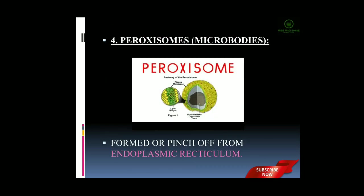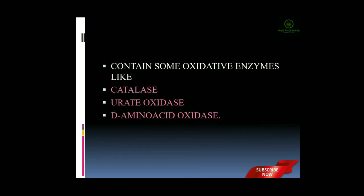Next is the peroxisome, otherwise known as a microbody. Here I show the picture of the peroxisome along with its parts. Peroxisomes are formed by pinching off from the endoplasmic reticulum — pinched off means removed from the surface. They consist of some oxidative enzymes like catalase, urate oxidase, and D-amino acid oxidase.